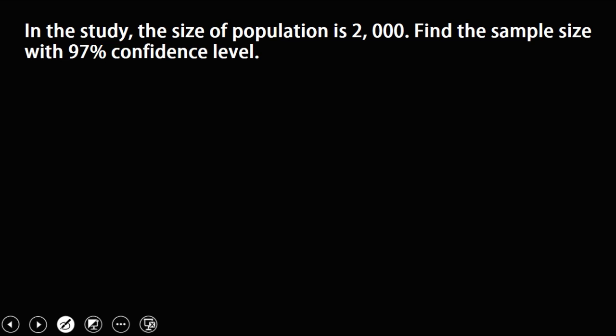We have this problem: in a study, the size of the population is 2000. Find the sample size with a 97% confidence level. From this problem, the population size N is 2000. Since the confidence level is 97%, the margin of error e is 3%, which converts to 0.03 in decimal form.